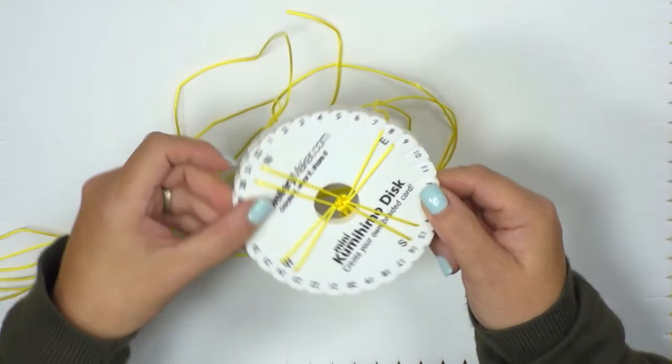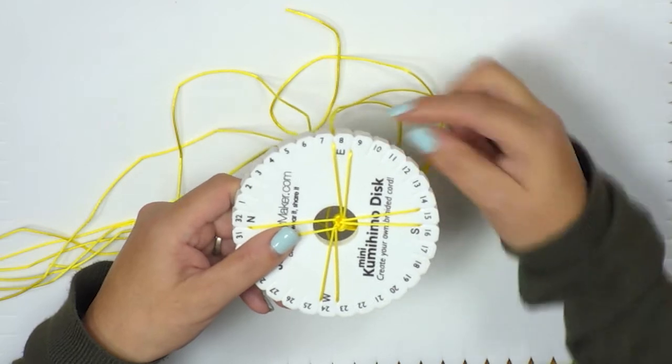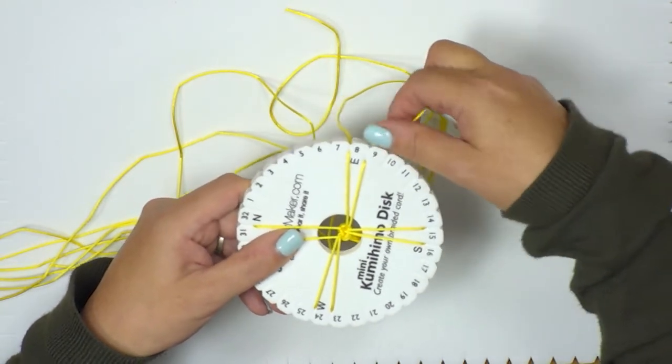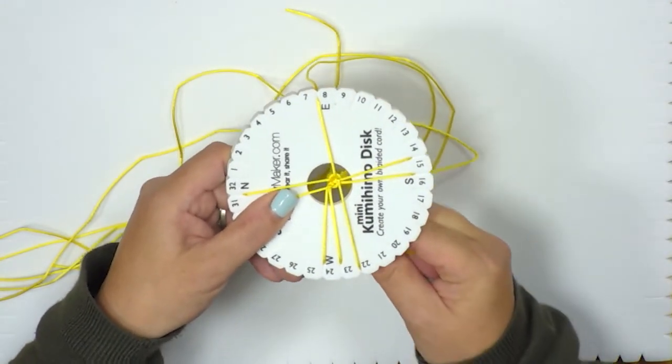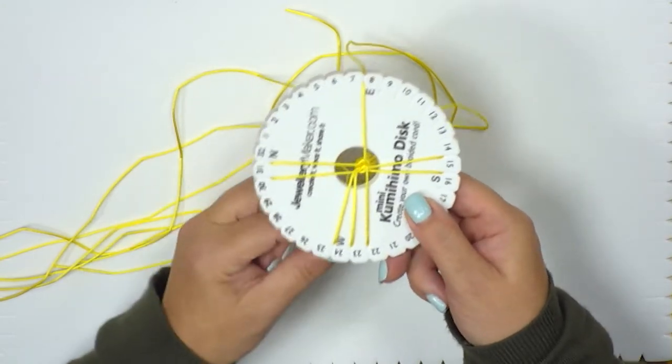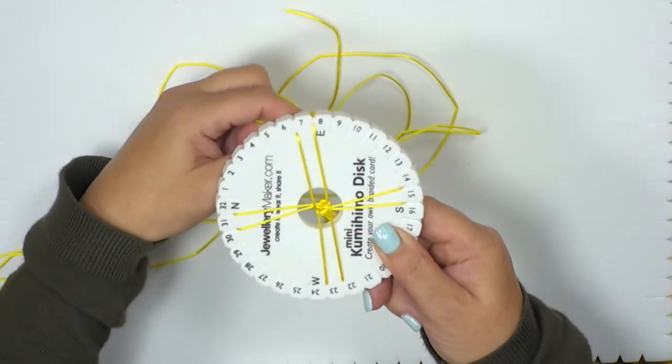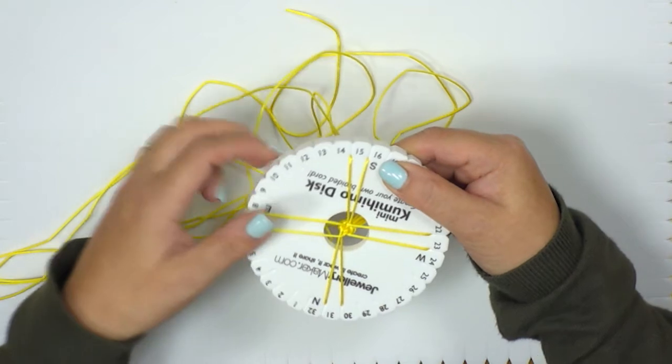I'm now going to turn my disc a quarter turn. So now I'm looking at the east now. So again I take the top right cord, pop it into the bottom right slot, take the bottom left cord, pop it into the top left slot and quarter turn anti-clockwise.